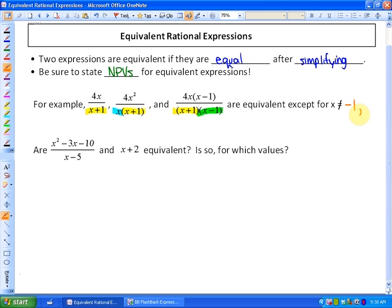So x cannot equal negative one for that x plus one factor, x cannot equal zero for that x factor, and for the factor x minus one, x can also not equal positive one. So they're equivalent in all cases except when x is equal to negative one, zero, or positive one.